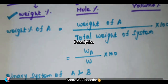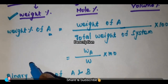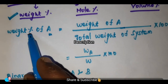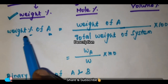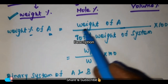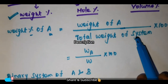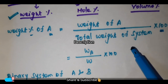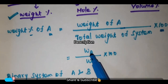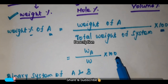First, let us see what is weight percentage. Weight percentage is nothing but the weight of any component expressed as a percentage of the total weight of the system. That is known as weight percentage of A. The formula to calculate weight percentage of A is: weight of A divided by total weight of the system, into 100. So, weight of A is W_A divided by total weight of system W, into 100.